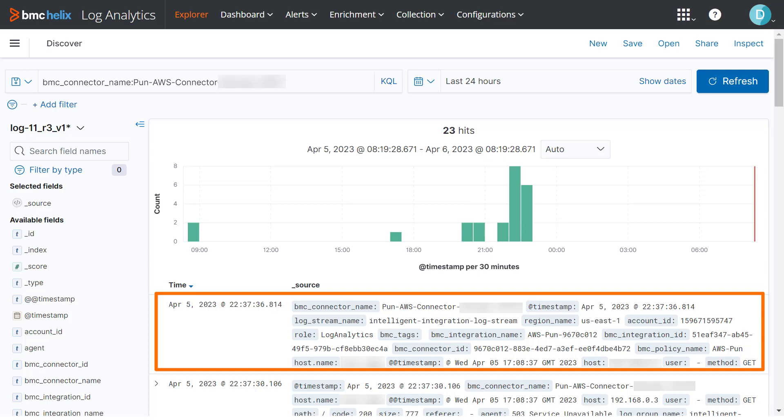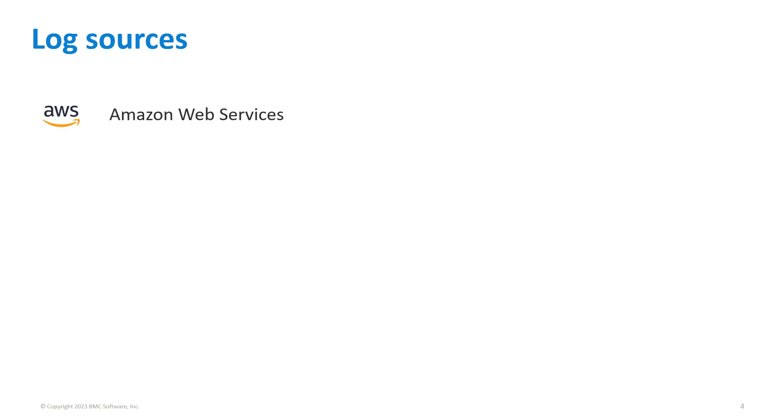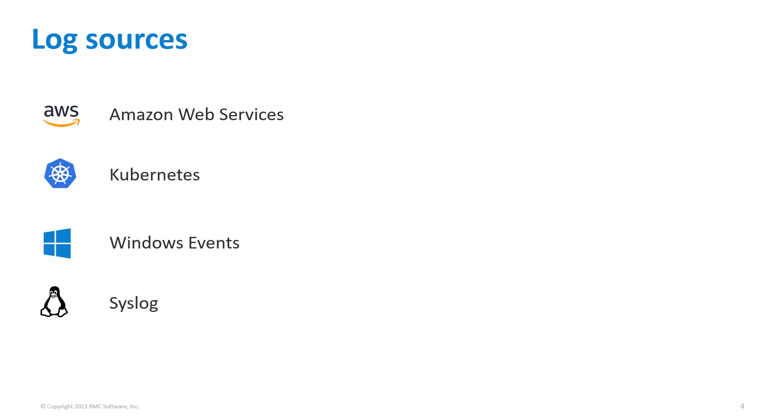To analyze the logs with BMC Helix Log Analytics, you start with collecting logs. You can collect logs from different applications or log sources including public cloud AWS, Kubernetes, Windows Events, Syslog, and so on.